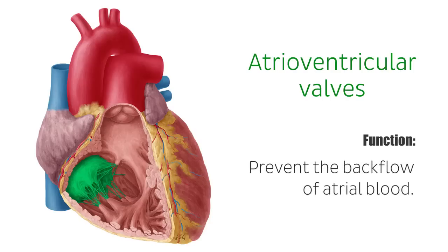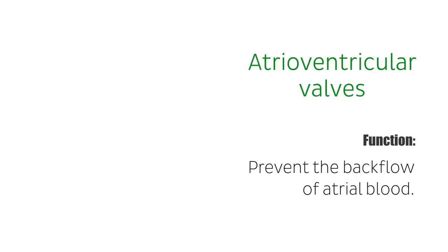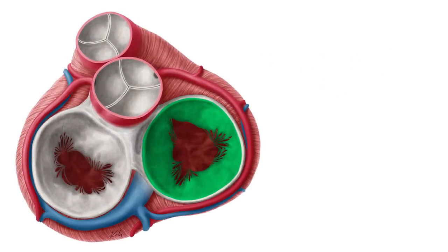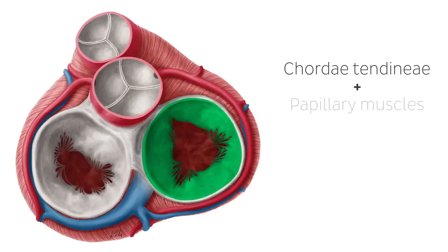The tricuspid valve functions to prevent the backflow of atrial blood accumulation when it passes onto the ventricle. The atrioventricular valves attach to the ventricular walls via the chordae tendiniae, which in turn attach to the papillary muscles so that the cusps are held tense and don't invert into the atria. This extended attachment of the chordae tendiniae and the papillary muscles is known as the subvalvular apparatus.